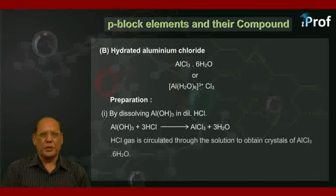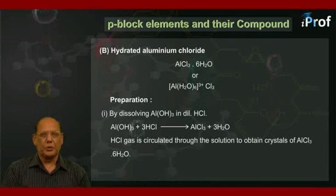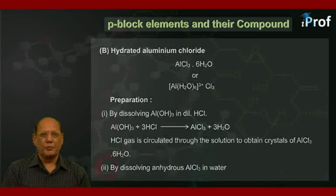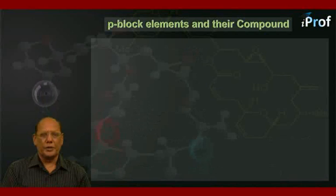Here, HCl gas is circulated through the solution to obtain crystals of AlCl3·6H2O. Second, by dissolving anhydrous aluminum chloride in water that we have already seen.